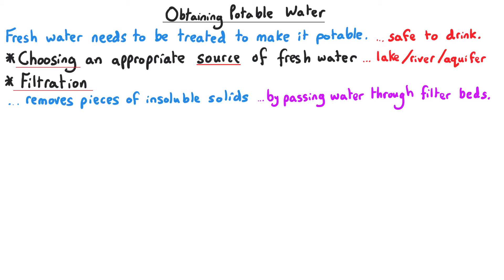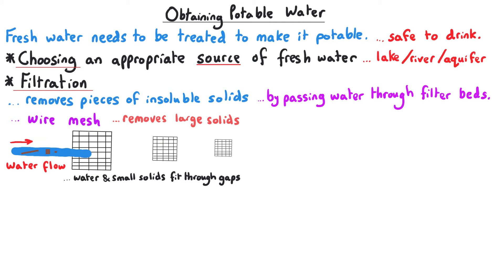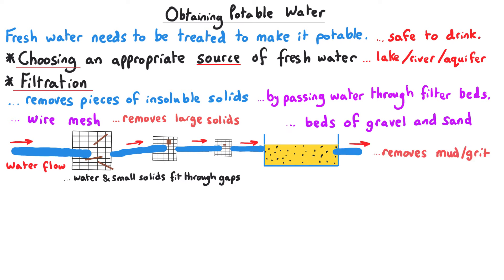A filter bed is likely to be a few different things. First, there's a wire mesh which removes large solids—often we have wire mesh of decreasing diameter to catch smaller and smaller pieces of insoluble solids. Then the water is passed through beds of gravel and sand to remove really small particles like mud or grit. This works because the gaps between sand and gravel are really small—water molecules can pass through but mud and grit particles are larger and get trapped.